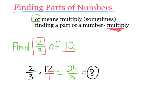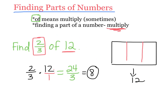Another way to think about this: draw a rectangle representing 12. I want to find 2 thirds of it, so I need to split it into thirds. 12 divided by 3 is 4, so each third has 4. It says I need 2 thirds, so I take 2 of those sections, which equals 8. I got the same answer both ways.